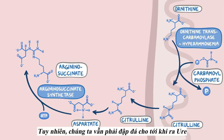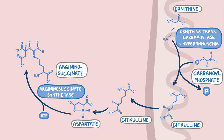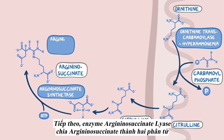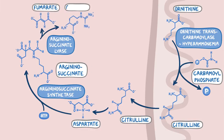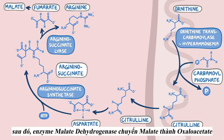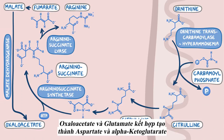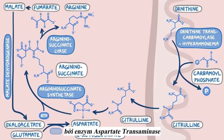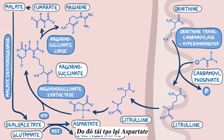We have to continue playing with the clay until we fully get urea. Next, the enzyme argininosuccinate lyase breaks up argininosuccinate into two molecules: fumarate and arginine. Fumarate is first converted to malate, and then the enzyme malate dehydrogenase converts malate to oxaloacetate. Oxaloacetate and glutamate are converted to aspartate and alpha-ketoglutarate by the enzyme aspartate transaminase, or AST. This regenerates aspartate so that it may enter the next urea cycle.